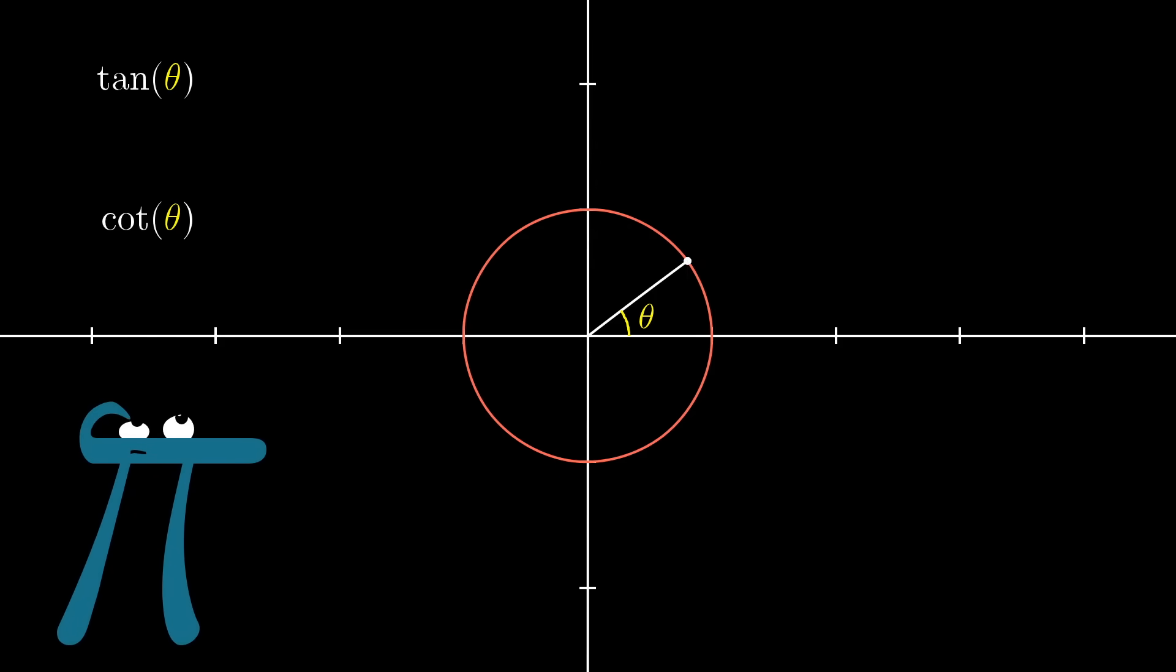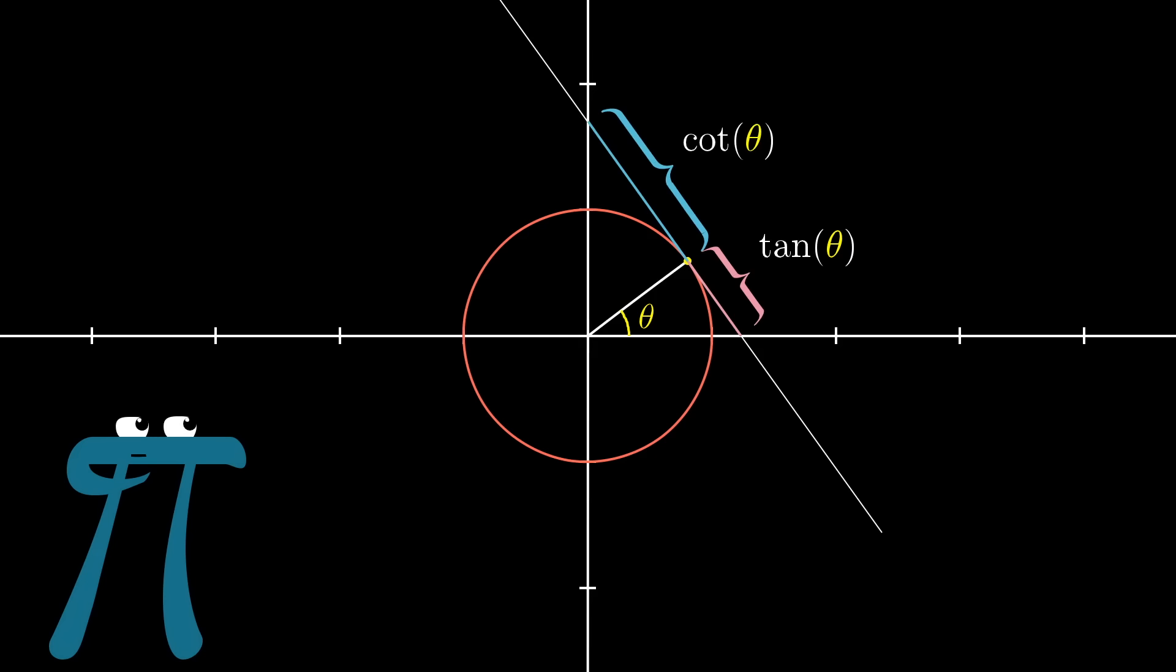If you draw a line tangent to the circle at this point, the distance from that point to the x-axis along that tangent is, well, the tangent of the angle. And the distance along that line to the point where it hits the y-axis, well, that's the cotangent of the angle.